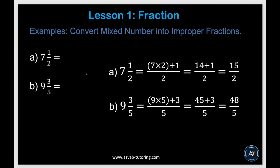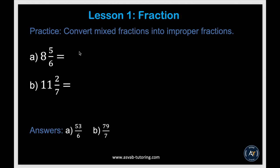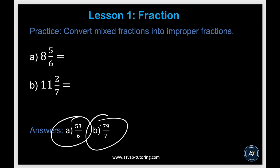Next, we'll learn how to convert a mixed number into an improper fraction. A mixed fraction has a whole number and a proper fraction — where the numerator is smaller than the denominator. You multiply and add: for 7 and 1 half, 7 times 2 is 14 plus 1 is 15 over 2. For 9 and 3 fifths, 9 times 5 is 45 plus 3 is 48 over 5. Try the examples yourself and make sure you get the correct answers.